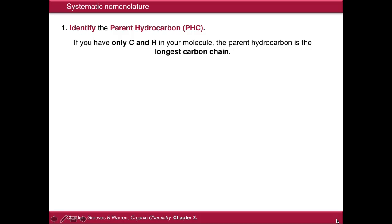The first step is to identify what we call the parent hydrocarbon. Now if we have only carbon and hydrogen in a molecule, this is quite simply the longest carbon chain we can find. So in this example here, we have one, two, three, four, five carbons in the chain, therefore our parent hydrocarbon is pentane.